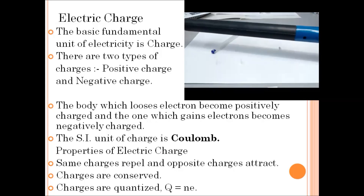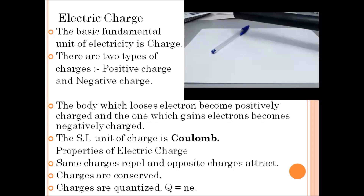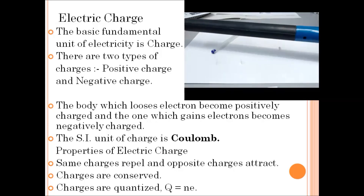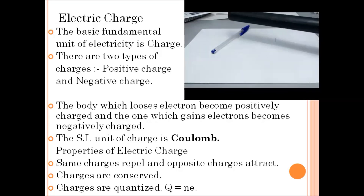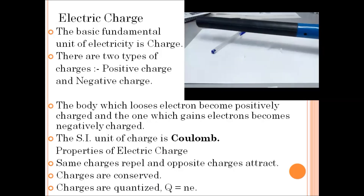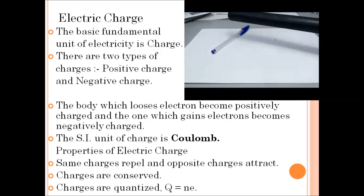The basic fundamental unit of electricity is electric charge. These are of two types: positive charge and negative charge. The body which loses electrons becomes positively charged and the one which gains electrons becomes negatively charged. The SI unit of electric charge is coulomb. Some properties of electric charge: same charges repel and opposite charges attract. Charges are conserved — if one body loses some electrons, the other body gains an equal number, so the total charge remains constant. Charges are also quantized, meaning we can calculate the total charge transferred from one body to another.